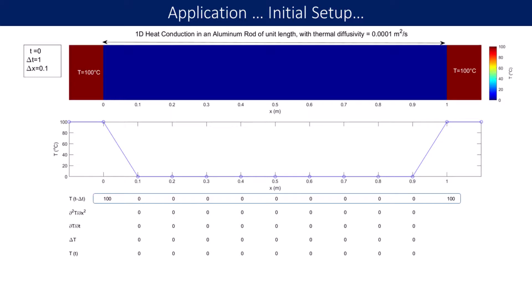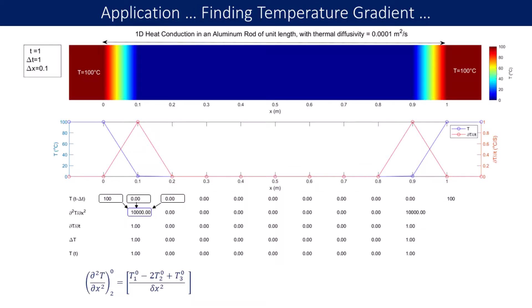The blue line is the temperature curve and the red line is its derivative. The temperature at the ends is 100 degrees whereas at internal nodes it is zero. The red line is invisible because at the 0th time step the computations haven't yet begun. Below these figures we have a table showing values of various parameters at all intermediate nodes at a particular instant of time: the temperature at the previous time step, the gradient of temperature, the time derivative, the temperature increment, and the temperature at the current time step.